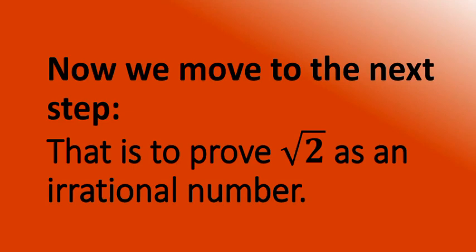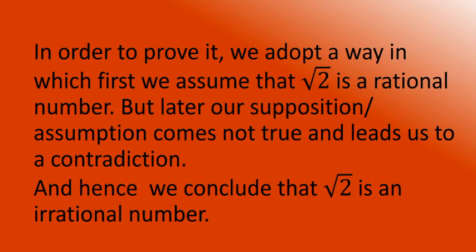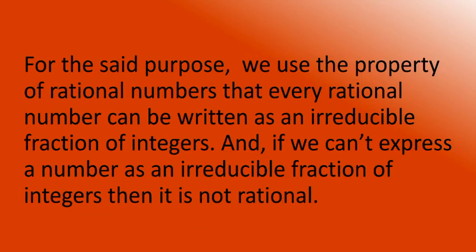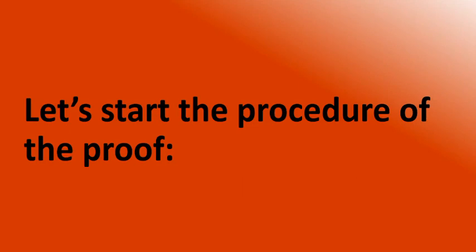Now we move to the next step: to prove that square root of 2 is an irrational number. In order to prove it, we adopt a method in which we first assume that square root of 2 is a rational number. But later, our assumption leads us to a contradiction, and hence we conclude that square root of 2 is an irrational number. For this purpose, we use the property that every rational number can be written as an irreducible fraction of integers, and if we cannot express a number as an irreducible fraction, then it is not rational.